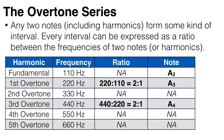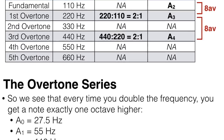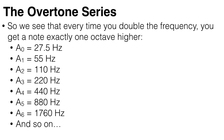Now let's ignore the second overtone for the moment and look at the third overtone — we see it has a frequency of 440 Hertz. If we compare this to the first overtone, then we have 440 over 220, which again is a ratio of 2 to 1, or an octave. So every time you double the frequency you get a note exactly one octave higher. So 110 Hertz is the note A, 220 is the note A an octave higher, 440 is the note A an octave higher than that, 880 is an A an octave higher than that, and so on.